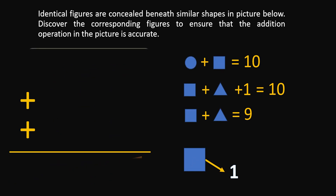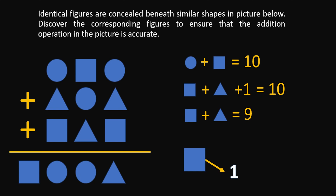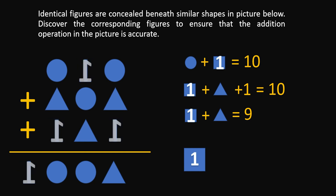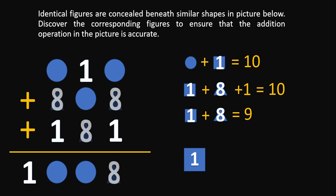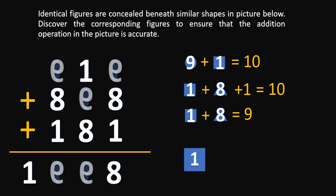We erase everything and now try replacing the square with the value of 1. We put 1 in the square and replace all squares on both sides with 1. On the right side, 1 plus triangle equals 9, so the triangle must equal 8. We replace all triangles with 8. Now, circle plus 1 equals 10, so the circle must have a value of 9. We replace all circles with 9 and test this solution.